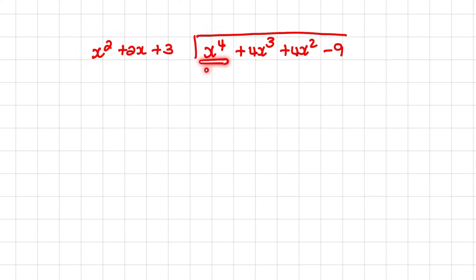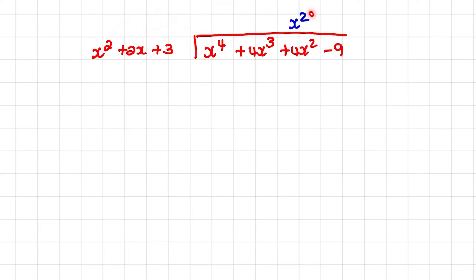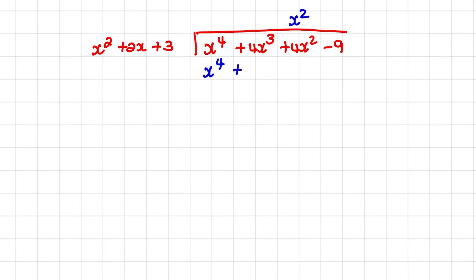So x to the power of 4 divided by x squared would be equal to x squared. Now we take that result and multiply it with every term in the factor. So x squared times x squared equals x to the power of 4. Then x squared times 2x would be equal to plus 2x cubed. And then x squared times 3 would be equal to plus 3x squared.